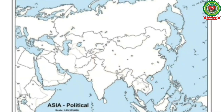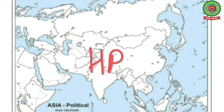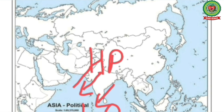In winter, large parts of Asia get intensely cooled and a high pressure is created over the mainland of Asia, whereas the Indian Ocean has low pressure because its water is warmer than the land in winter. So the winds blow from the mainland of India to the Indian Ocean. This is the winter monsoon.